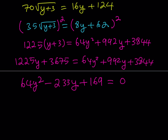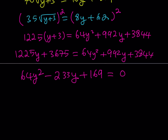Now, it may look like a perfect square, like 8y minus 13 squared, but it's a little different. One thing to notice is that if you add all the coefficients — 64 minus 233 plus 169 — you get 0. That means y equals 1 is a solution. For the other root, instead of using the quadratic formula, we can use Vieta's formulas. The product of the roots is c over a, which is 169 over 64. Since one root is 1, the other root is 169 over 64.